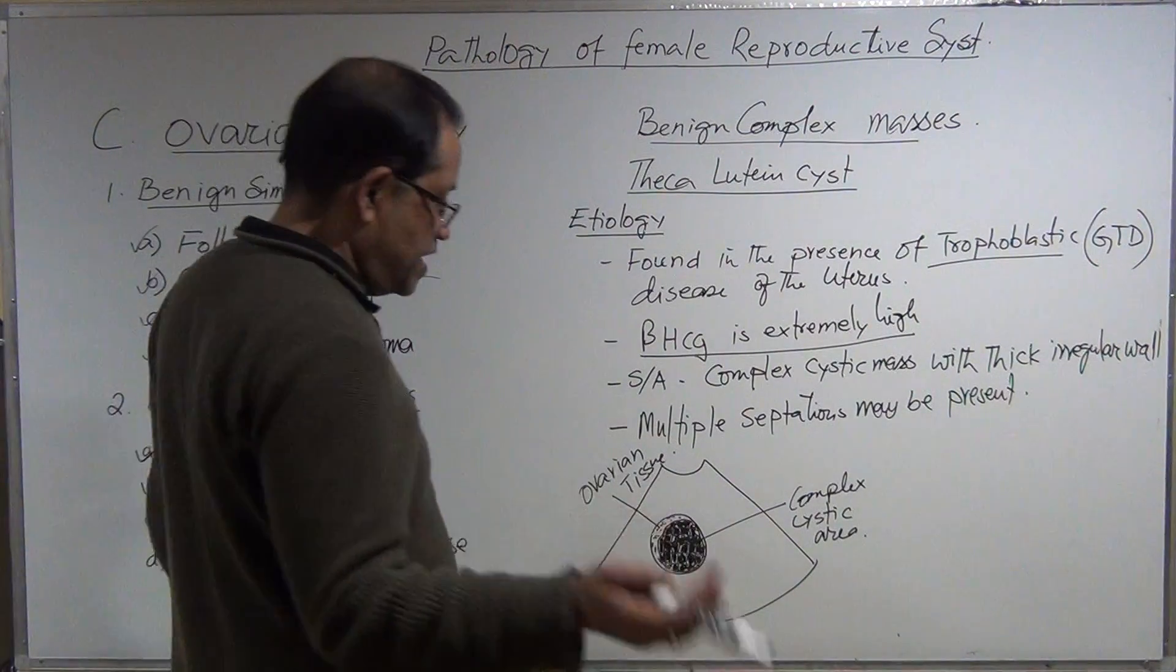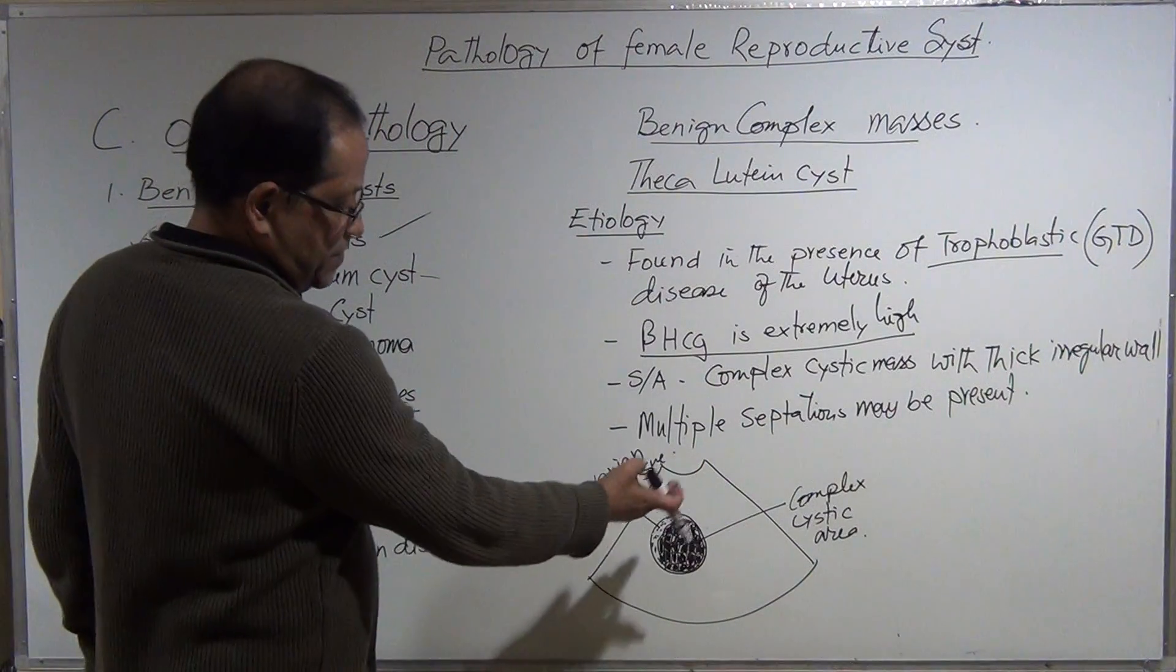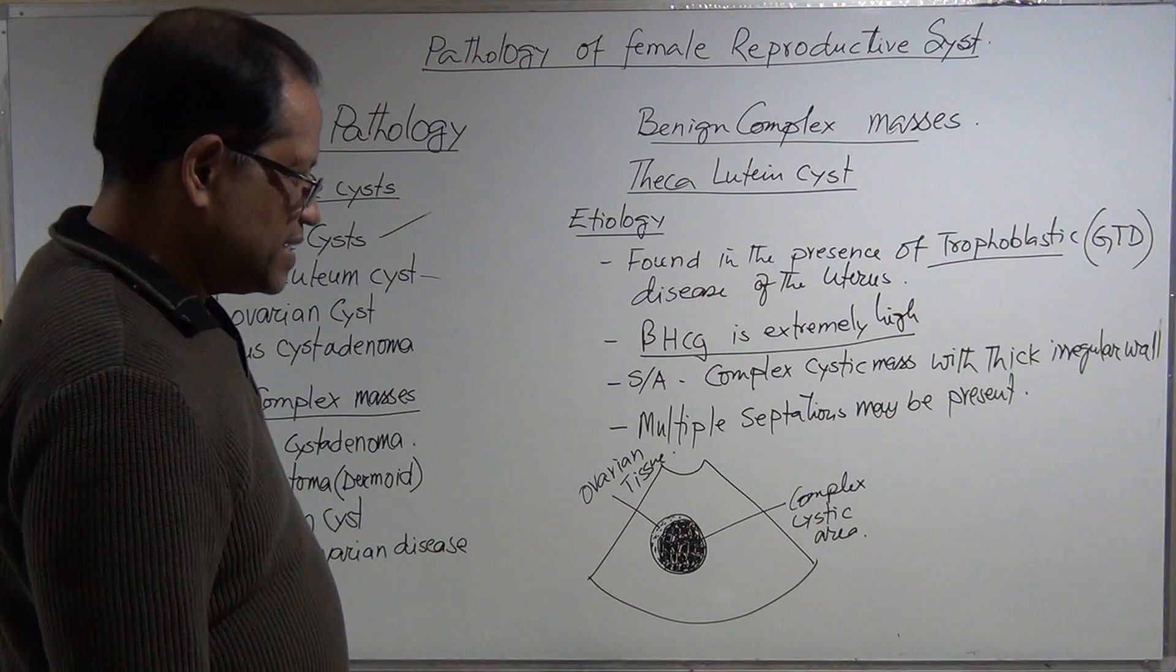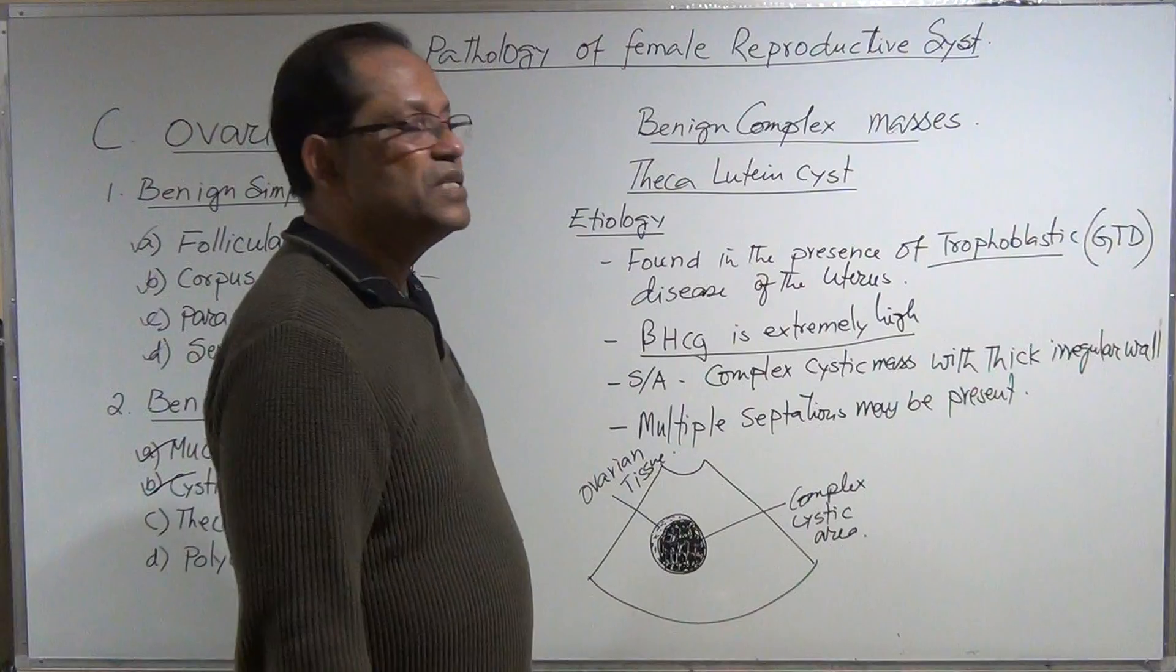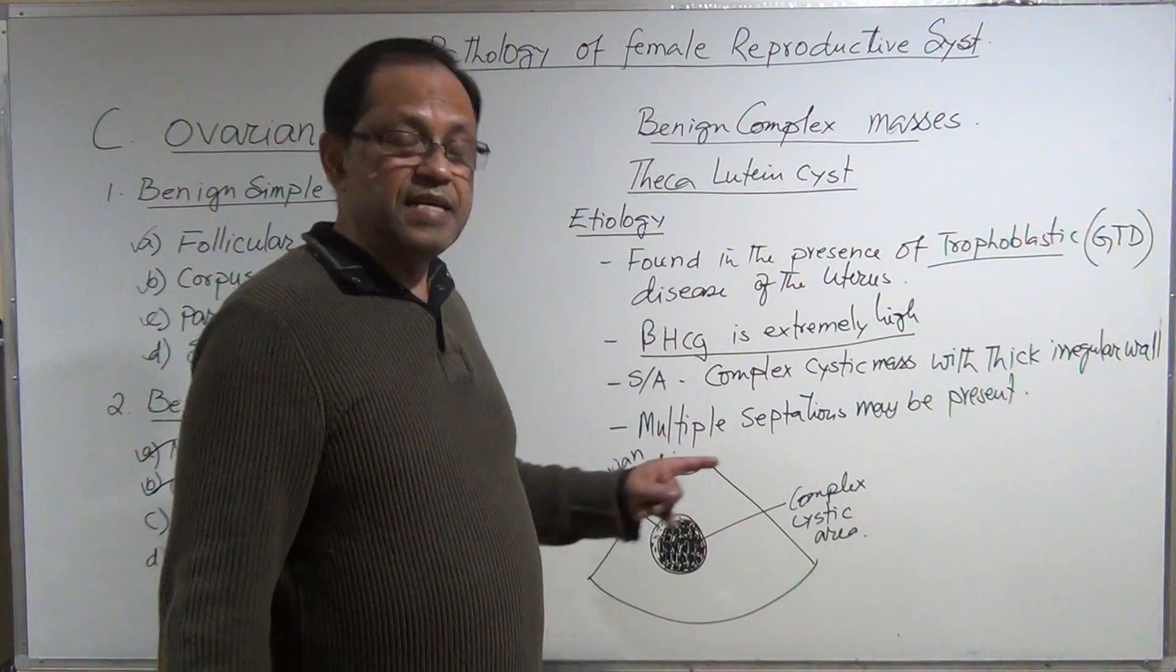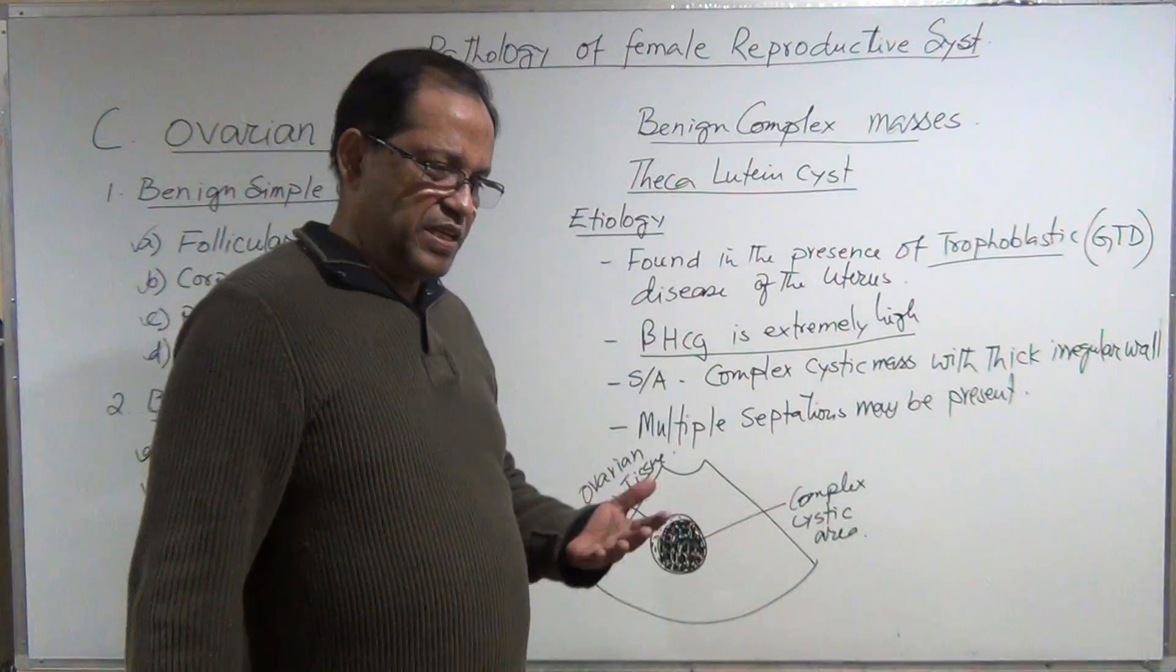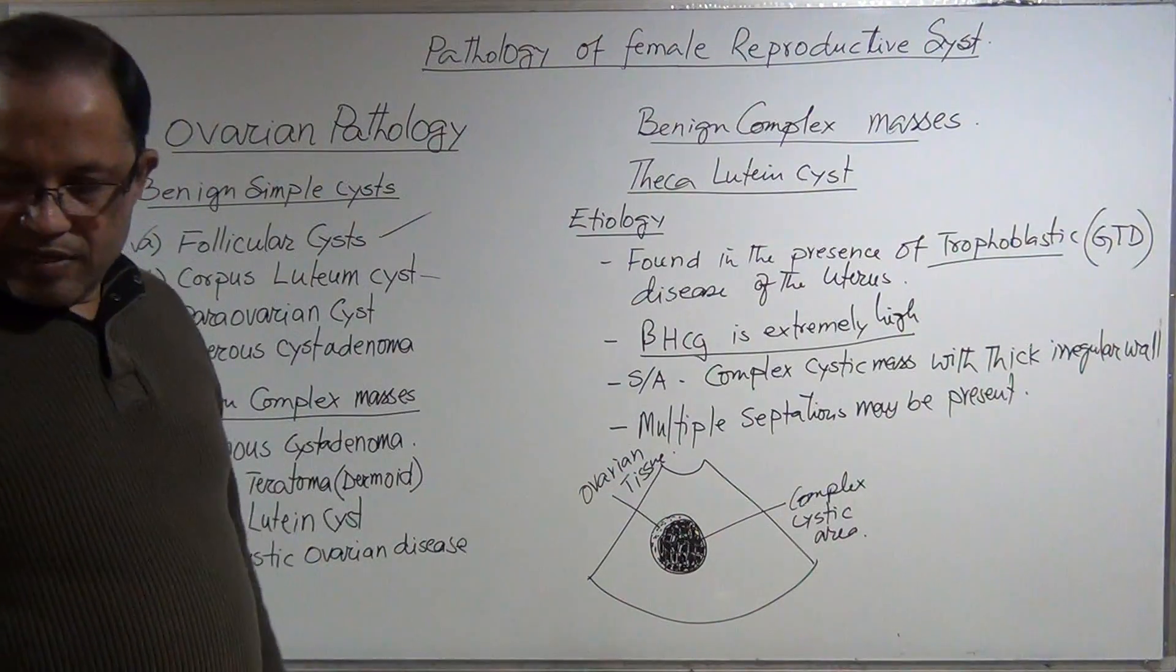History is very important. Look for the ovary, and if you see this type of complex cystic area, then you have to understand that this is theca lutein cyst. Patient is not feeling good because too much beta hCG causes too much nausea and vomiting. That patient is really, really sick.